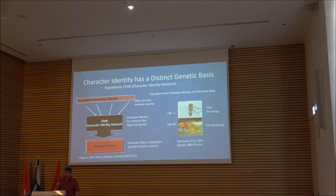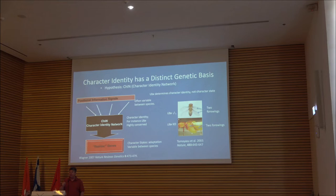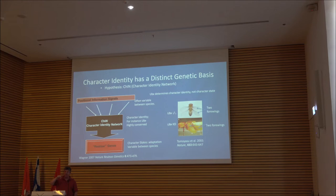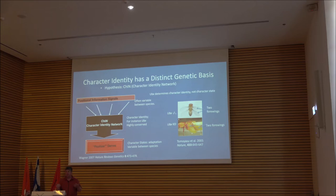In 2006, Günter Wagner at Yale publishes an idea for the origins of evolutionary novelty and the source of newly individuated homologous structures. He identifies something he calls a character identity network — a ChIN — as the basis for newly individuated homologous characters. His ChINs had exactly the same topological structure as kernels: they were a recursively wired network that locks down gene expression into a particular pattern. Günter was concerned with the origin of new cell types, particularly the origin of new placental cells, rather than spatial patterning. But there's an obvious homology between the two structures.